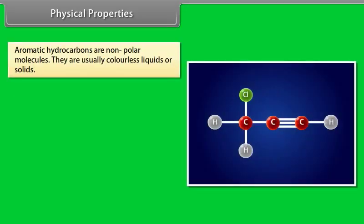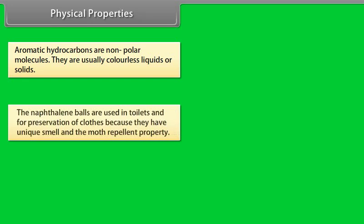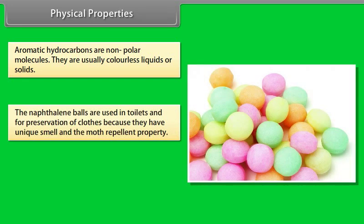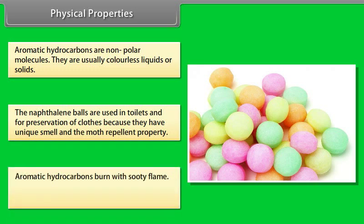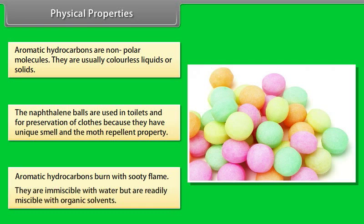Physical properties. Aromatic hydrocarbons are non-polar molecules. They are usually colorless liquids or solids. Naphthalene balls are used in toilets and for preservation of clothes because they have a unique smell and moth-repellent property. Aromatic hydrocarbons burn with a sooty flame. They are immiscible with water but are readily miscible with organic solvents.